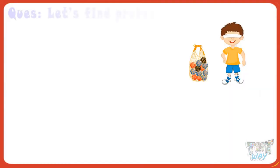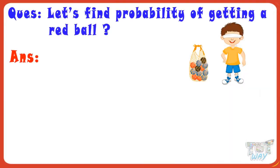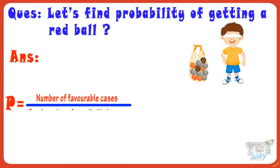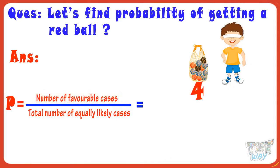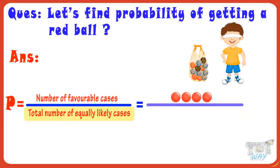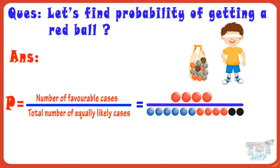Now, let's find probability of getting a red ball. We know the formula: number of favorable cases divided by total number of equally likely cases, or the total number of possible outcomes. Number of favorable cases, that is, the cases we want, are 4, as 4 red balls are there. And total number of equally likely cases, that is, total number of possible cases, are 12, as 12 balls are there. So, probability for getting a red ball equals 4 by 12, or 1 by 3.